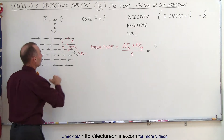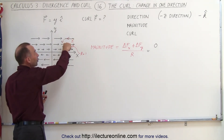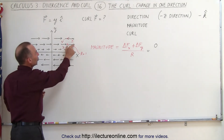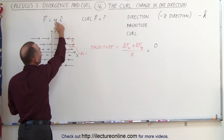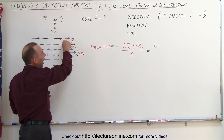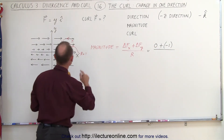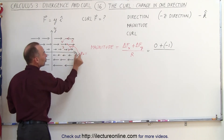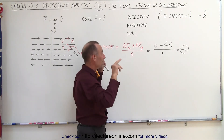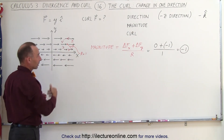Now moving in the y direction — when I move up, notice that the magnitude of the vector field increases. But also notice that the direction of the vector field, as I move in the positive y direction, is opposite to the direction of my circulation. So I need to add a negative quantity. It changes by one unit — if y goes from two to three, it changes by one unit. So moving one unit in the positive y direction, the magnitude changes by one unit, but since it's opposite to the circulation, I add negative one. Dividing by the radius of one, the magnitude equals one, but in the negative direction, confirming the circulation is clockwise.